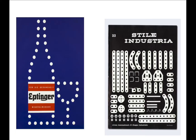On the left this is a contour of a bottle and a glass. On the right we have point signifying holes of these Meccano strips of metal.